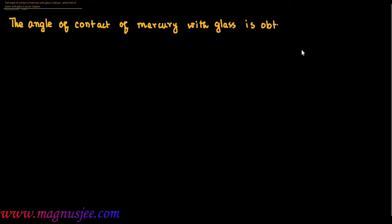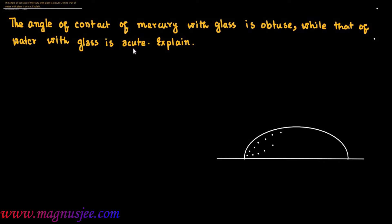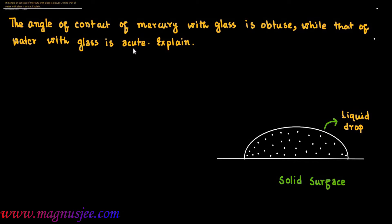The angle of contact of mercury with glass is obtuse, while that of water with glass is acute. Explain. A small quantity of liquid is poured on a solid surface — this is a liquid drop placed on a glass or solid surface. This is the solid surface on which the liquid drop is poured, and the surrounding medium of the liquid drop is here.